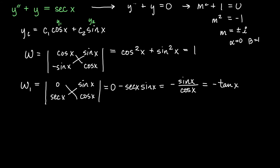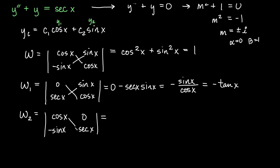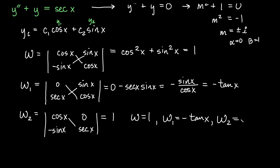For W2, we keep the original first column (cos(x), −sin(x)) and replace the second column with 0 and sec(x). The determinant is cos(x)·sec(x) − (−sin(x))·0 = 1 − 0 = 1. So W2 = 1. To summarize: W = 1, W1 = −tan(x), W2 = 1.